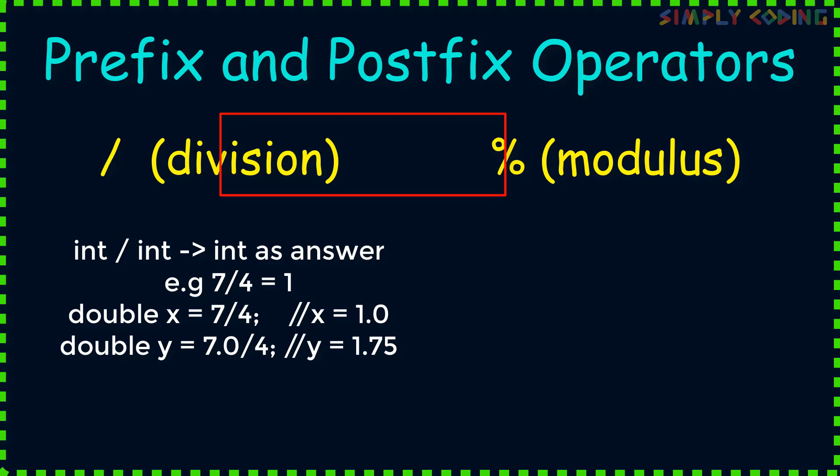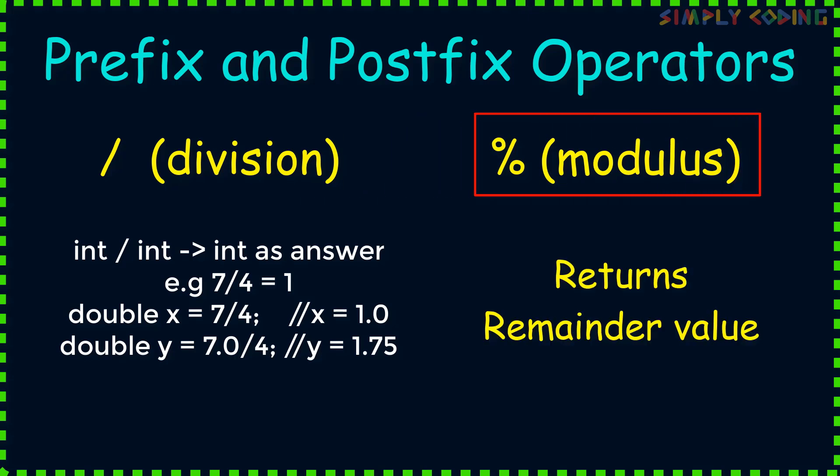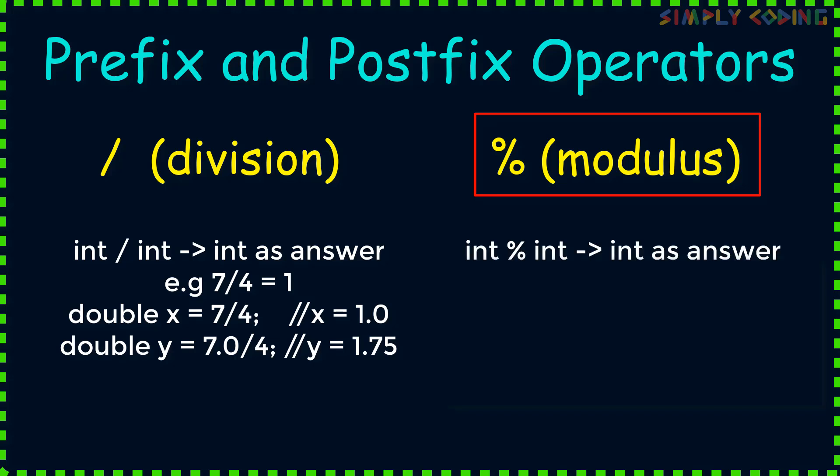Now let's see modulus or percent operator. It returns the remainder value only, which is also int value if both numerator and denominator is int. For example, 7%4 will return 3. 4%6 will return 4. If one of the value is double, it will then return the double value as shown. Again in most prefix and postfix questions, you will encounter int values only.